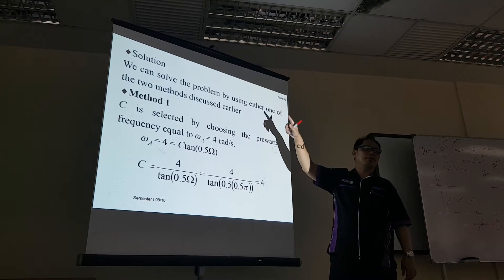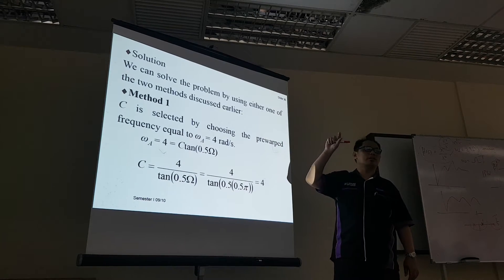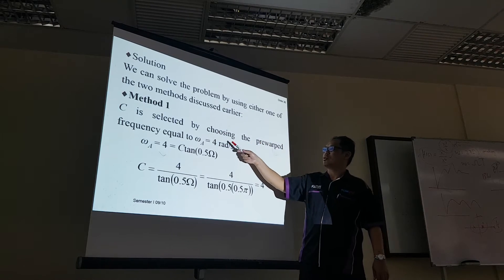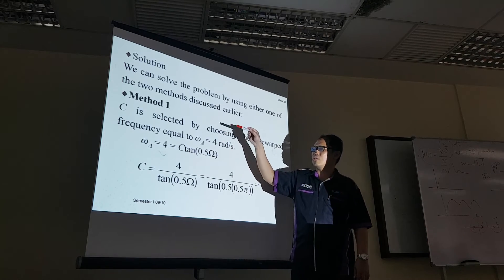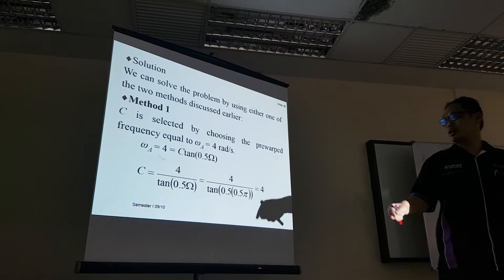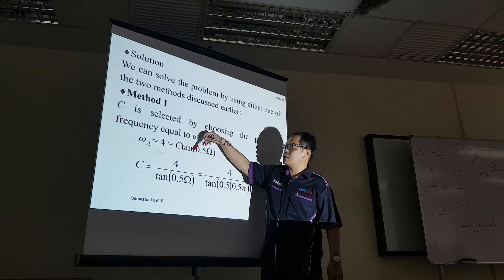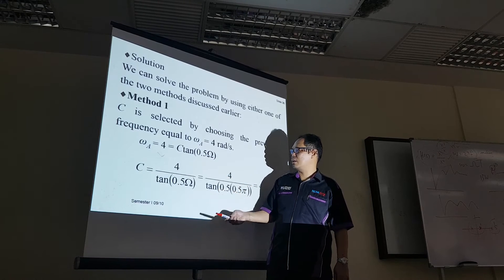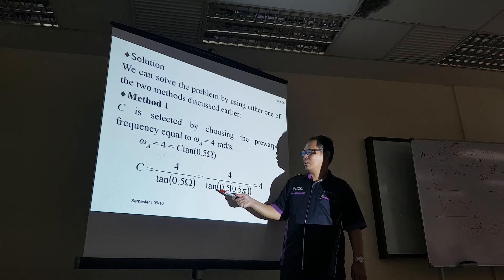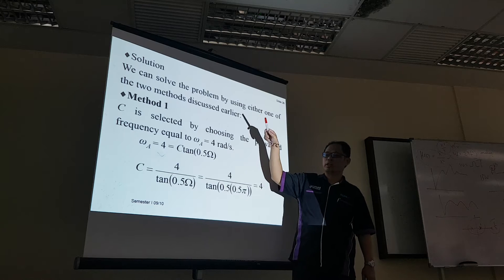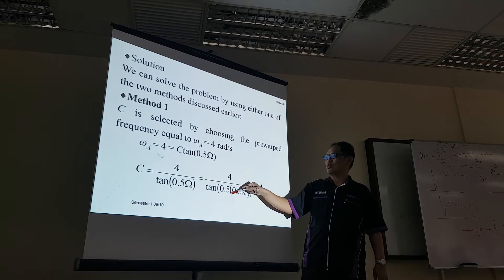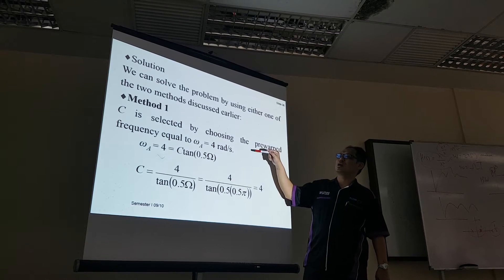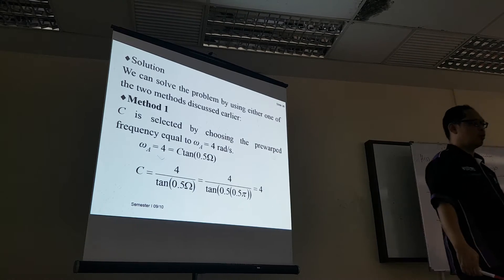Now solving using Method 1, where we calculate C. C is selected by the pre-warp formula. Ω_A is given as 4 radians, so using Ω_A = C·tan(0.5·Ω_D), we get C = 4/tan(0.5π). Substituting Ω_D = 0.5π gives C = 4. So using Method 1, C is calculated to equal 4.